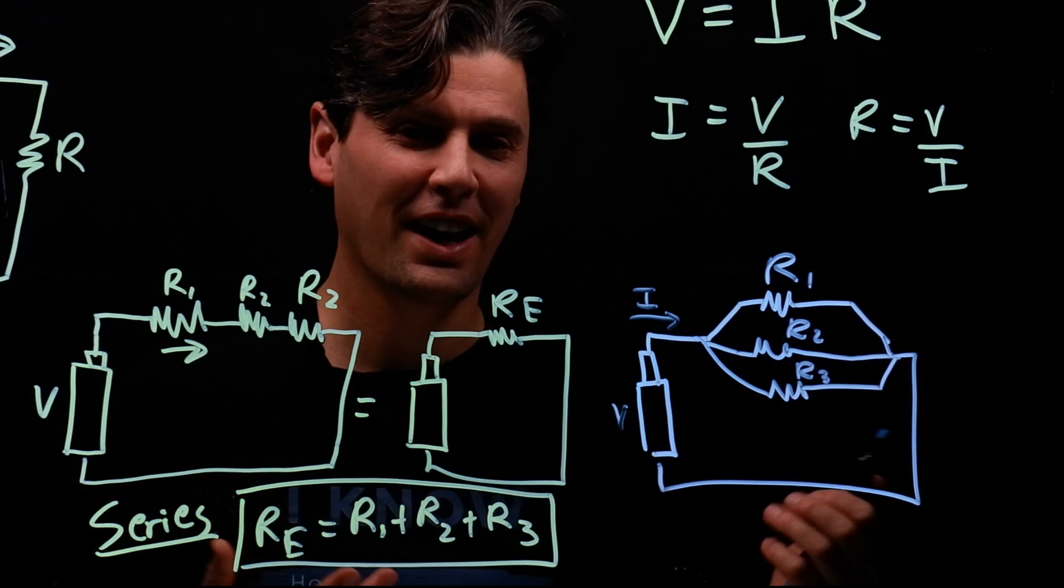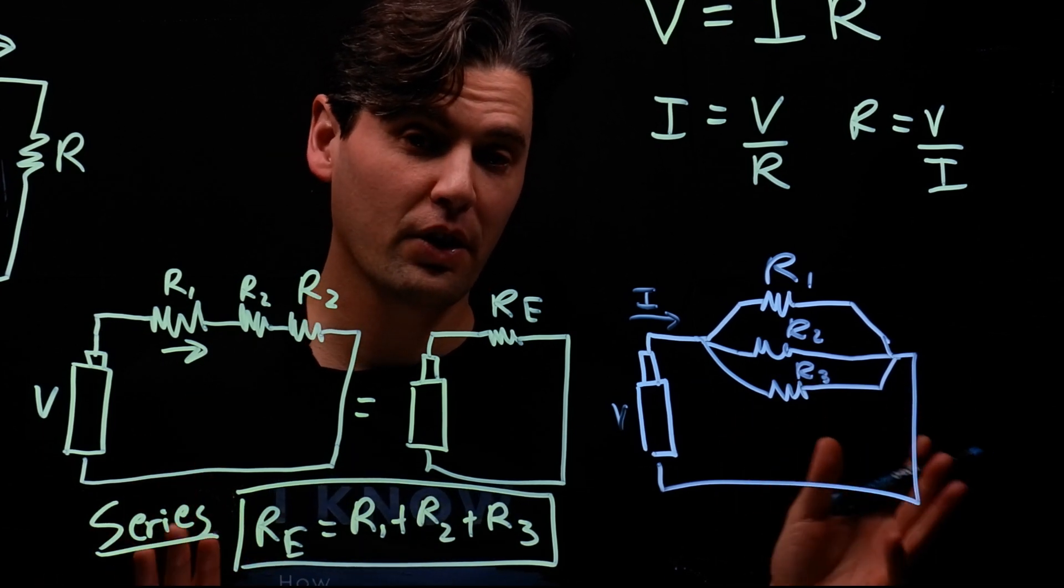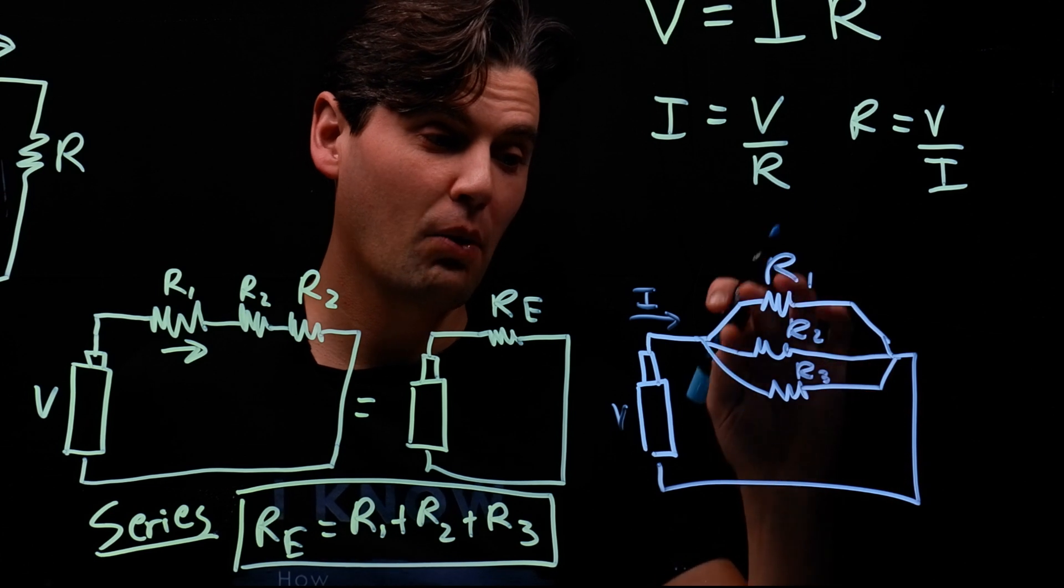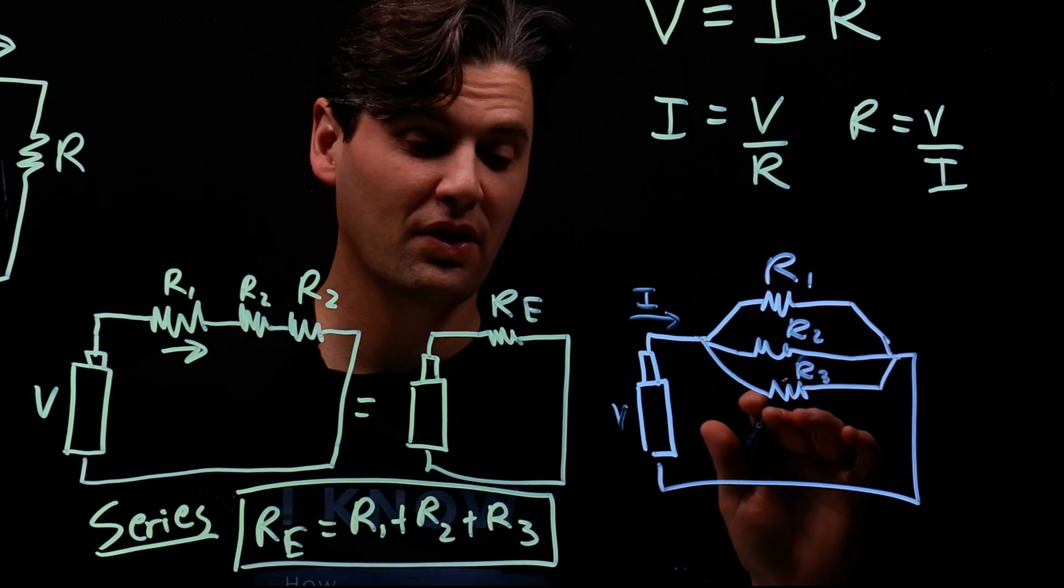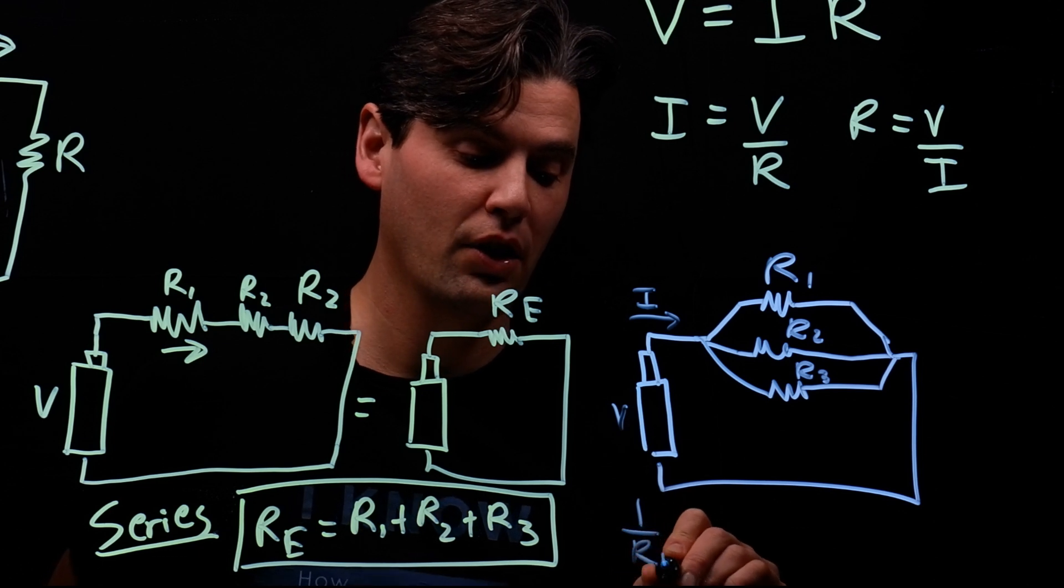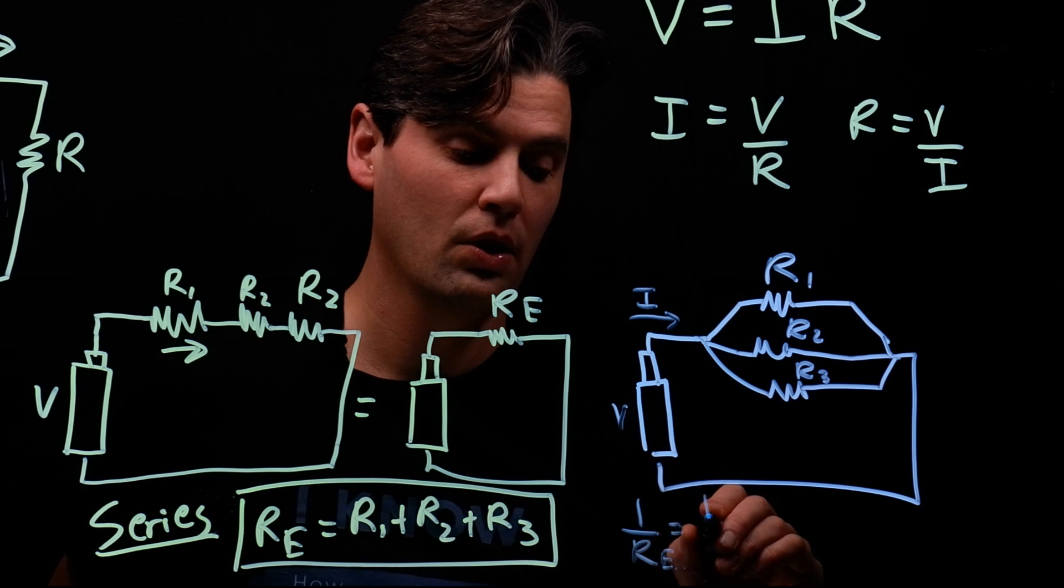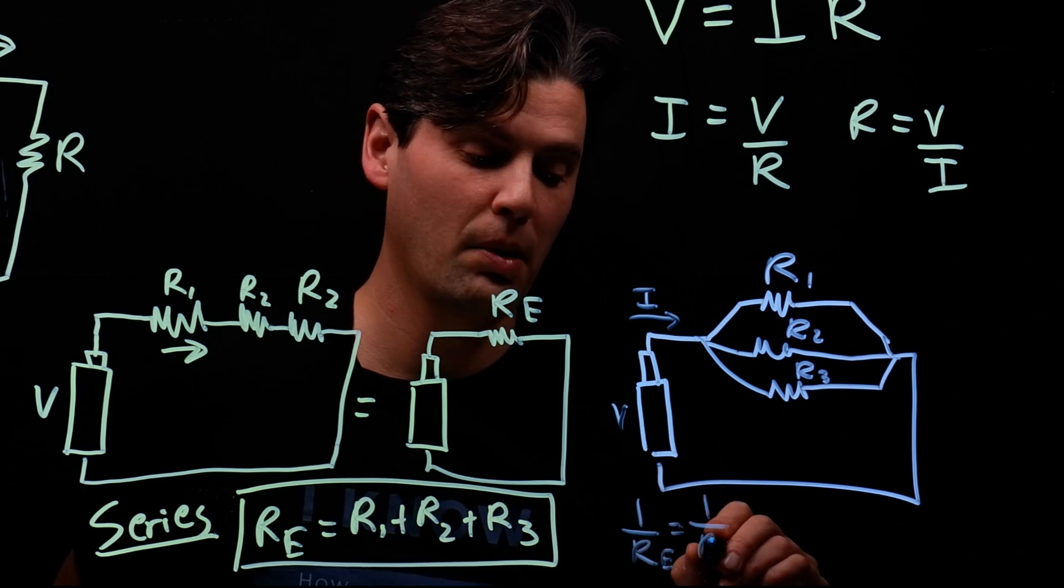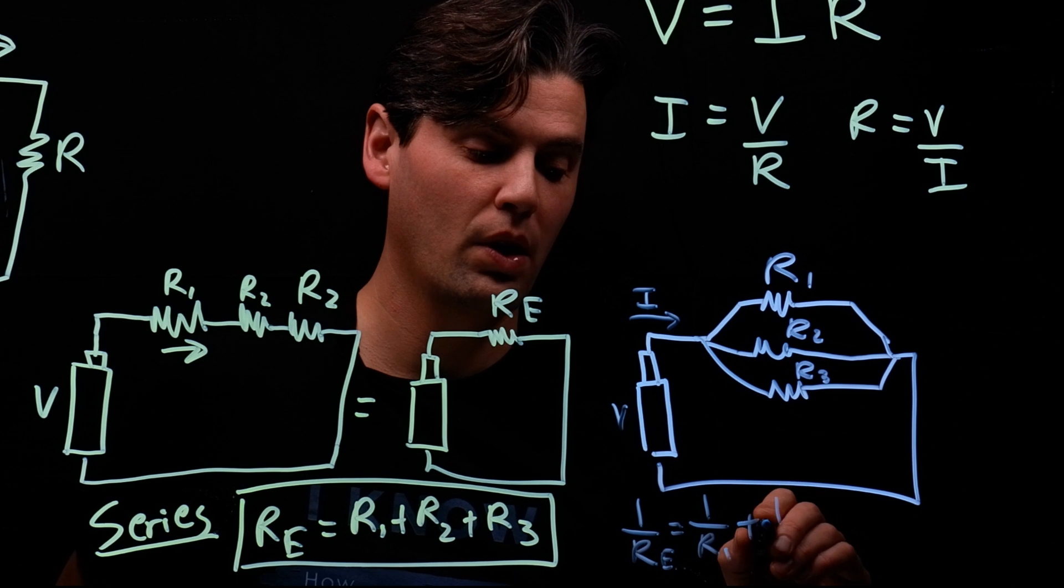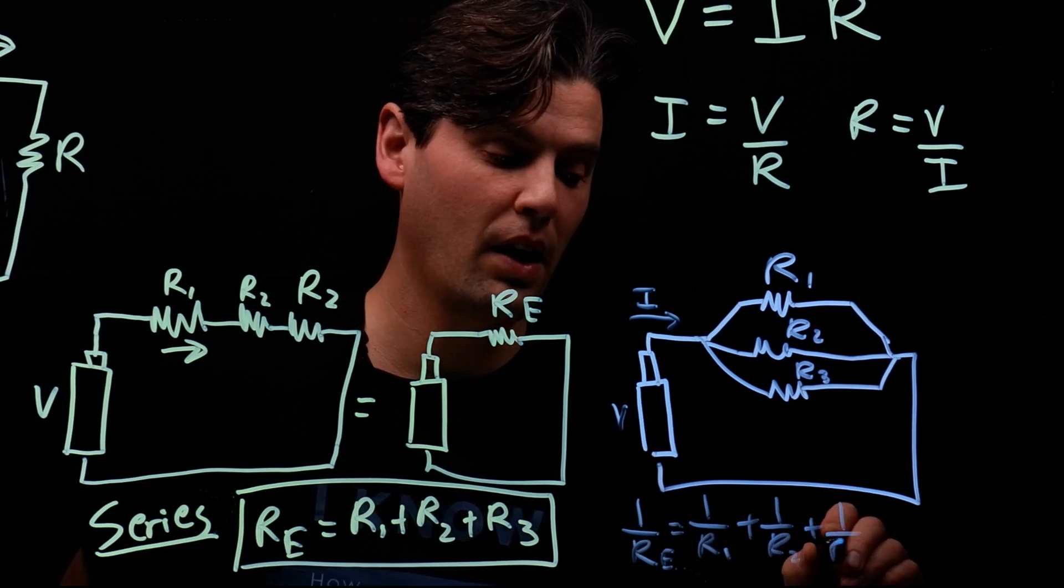But if we solve those equations and figure out what this effective resistance is, it's actually one divided by the effective resistance total is just equal to one divided by R1 plus one divided by R2 plus one divided by R3.